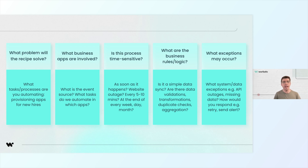And finally, we want to ask: what exceptions might occur? We should plan for the unexpected, such as missing data or system downtime. Salesforce or Jira APIs may not be responsive, or they could encounter rate limits. And searching by case identifier in Jira may not be reliable. These are all things that you want to take into account.